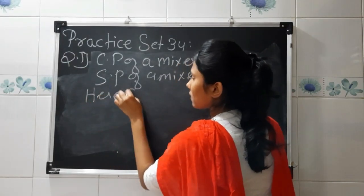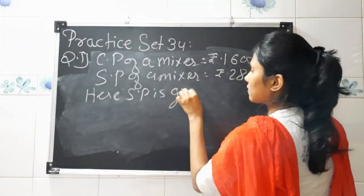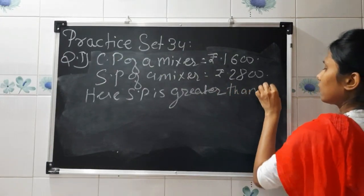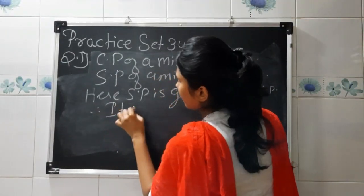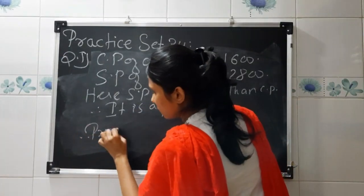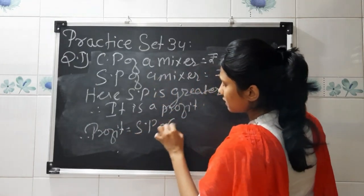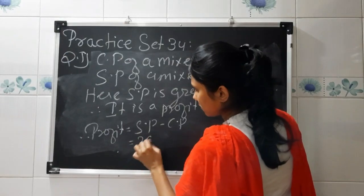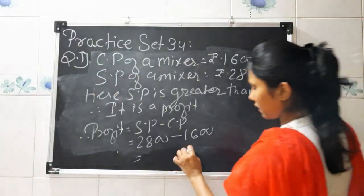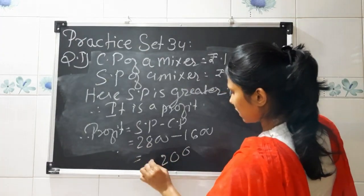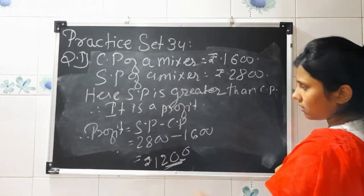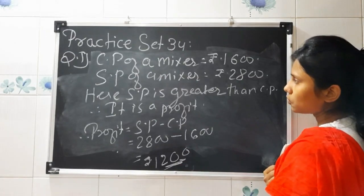Since selling price is greater than cost price, therefore profit equals selling price minus cost price. That is 2800 minus 1600, which gives us rupees 1200. So the profit earned by Mr. Mehta is rupees 1200.